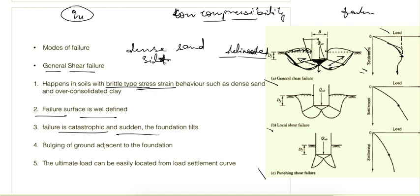The foundation tilts at failure, and bulging of the ground occurs because the soil tries to move outward. The ultimate load can be easily located from the load-settlement curve. This type of failure happens in dense sand.